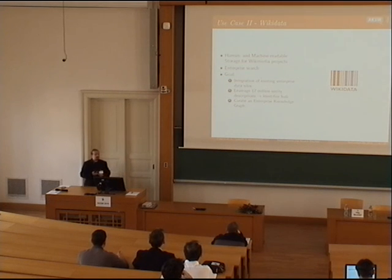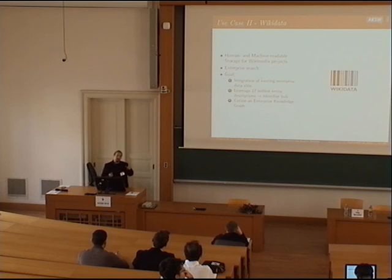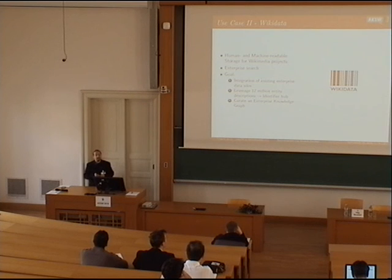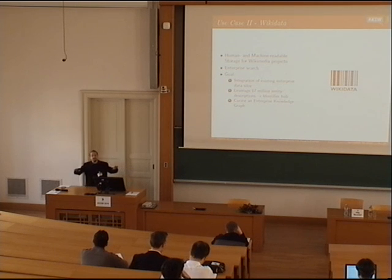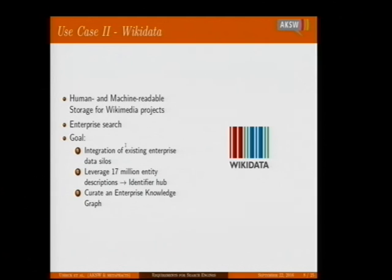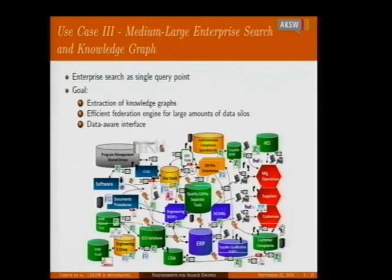The second use case deals with Wikidata. Wikidata is similar to Wikipedia but has provenance data based on structural feedback, and sees itself as a hub for all Wikimedia projects. A partner asked us to do enterprise search on that, because Wikidata can integrate existing enterprise data silos — identifying different records on different data silos makes it easier to link and search those repositories. Wikidata is a curated enterprise knowledge graph, very valuable for enterprises nowadays.